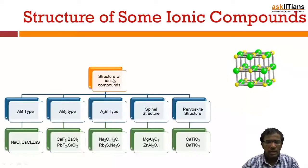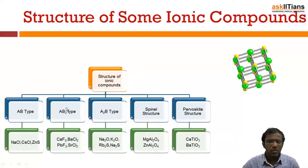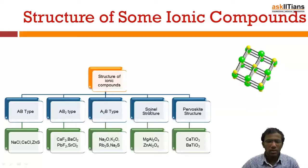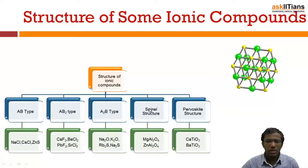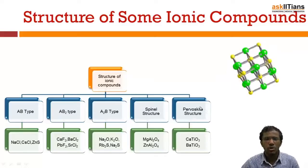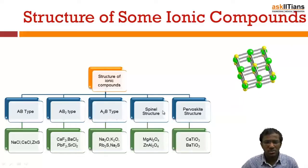So here I classified the structure of ionic compounds into five types: AB type, AB2 type, A2B type, spinel structure, perovskite structure, and we also have one more, that is corundum structure. So we have six different types of structures.